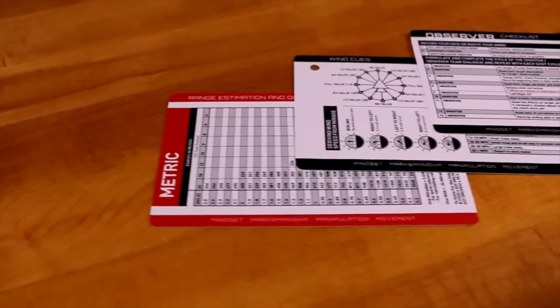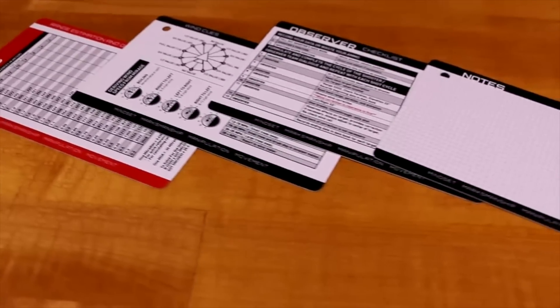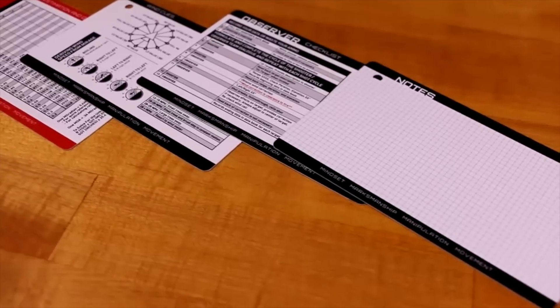The QR cards also contain useful information like mill ranging cards, wind estimation, firing checklists, observer dialogue, reticle holds, and note cards.